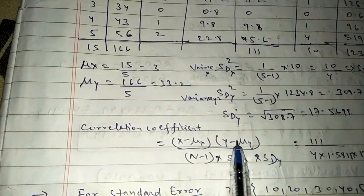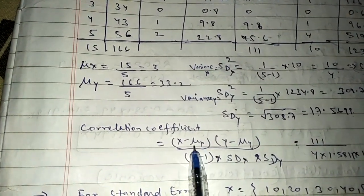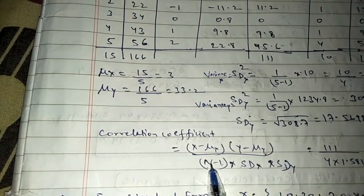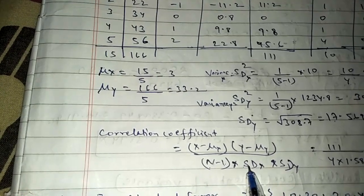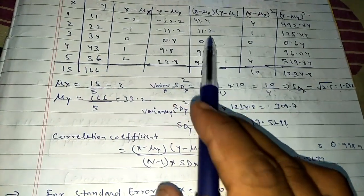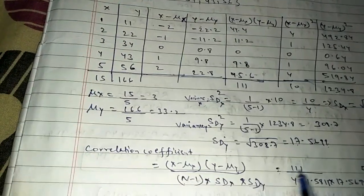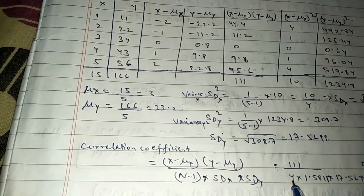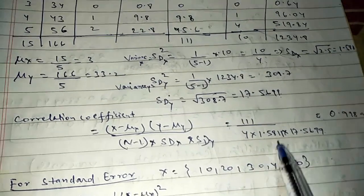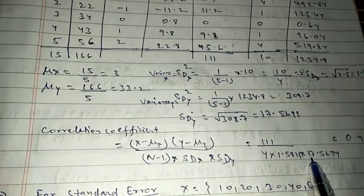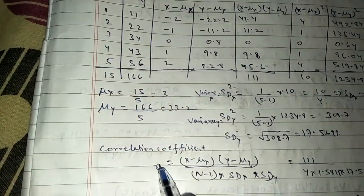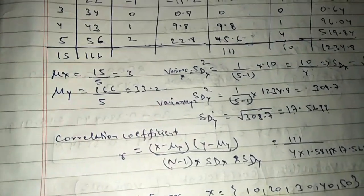The correlation coefficient formula is: r = summation of (x minus μx)(y minus μy) divided by (n minus 1) times standard deviation of x times standard deviation of y. The summation is 111, n minus 1 is 4, standard deviation of x is 1.581, and standard deviation of y is 17.56. After dividing, the correlation r equals approximately 0.9989.